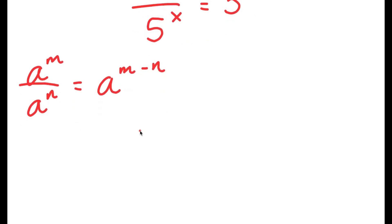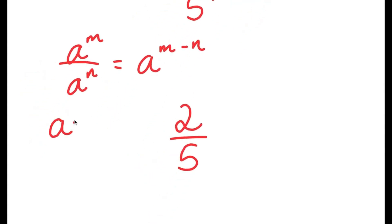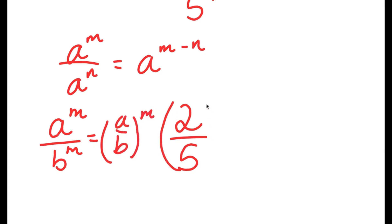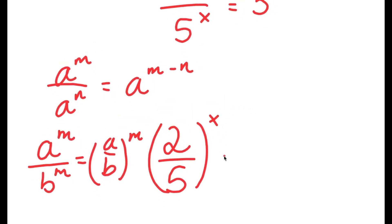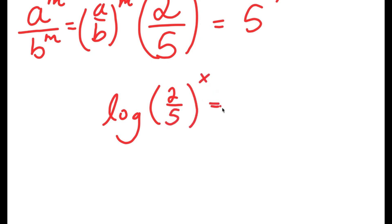Now from here, an important property of exponents is that if I have something in the form a to the power of m over b to the power of m, this is equal to a over b to the power of m. So 2 to the power of x over 5 to the power of x equals 2 over 5 to the power of x, and this is equal to 5 to the power of 7. Now I'm going to take the log on both sides, so I get log of 2 over 5 to the power of x is equal to log 5 to the power of 7.